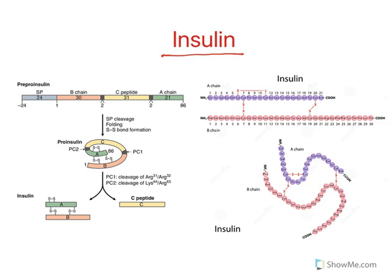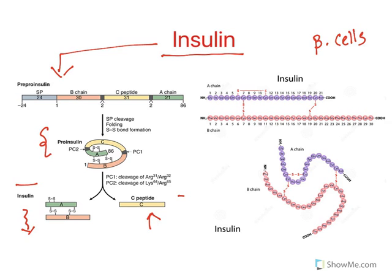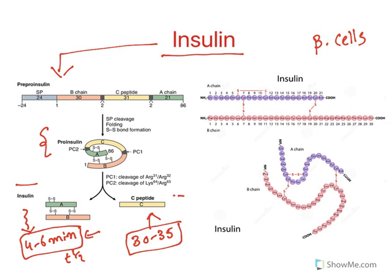Insulin is a peptide hormone which is secreted from pancreatic beta cells. It is released as pre-pro-insulin, which is converted to pro-insulin, which is then converted to insulin and C-peptide. C-peptide is important because insulin's half-life is only 4 to 6 minutes, making it difficult to measure. Whereas C-peptide will be present for 30 to 35 minutes, so it is easy to measure C-peptide to determine how much insulin has been released.